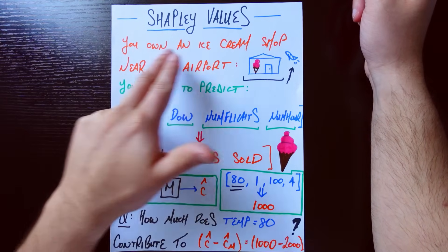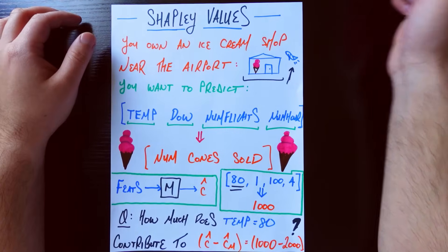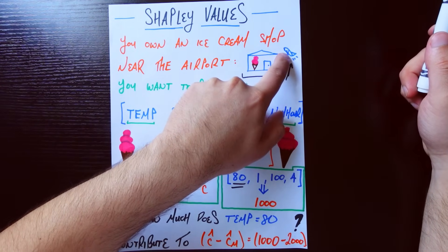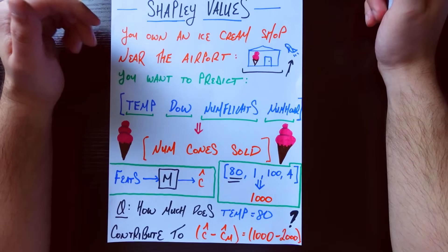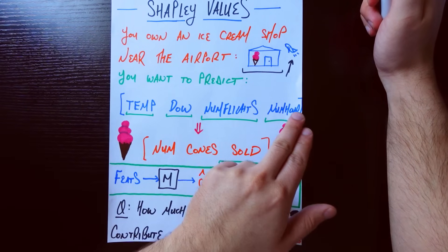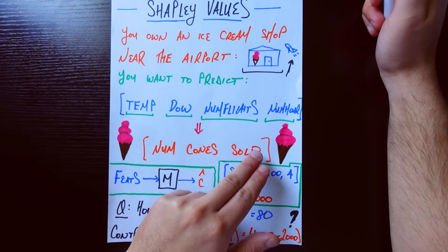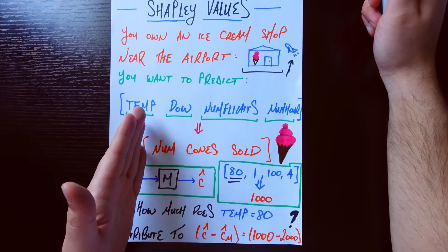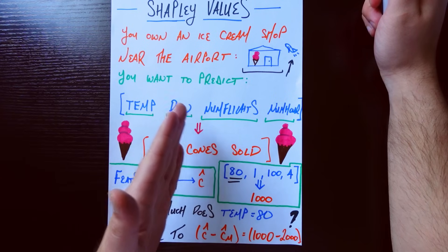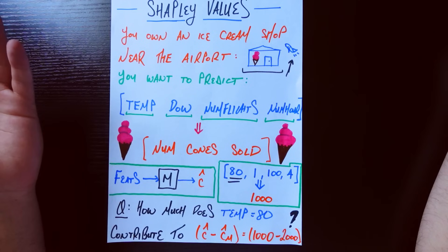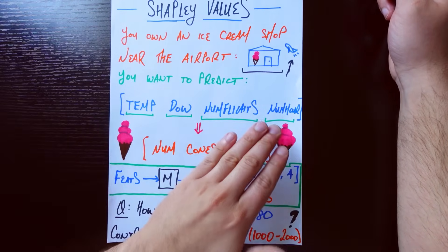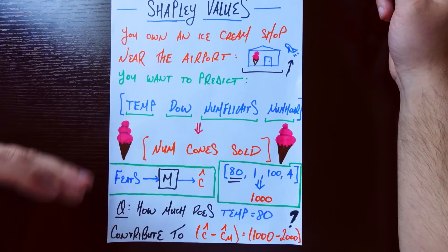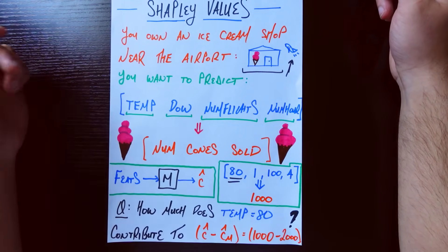Let's do a setup. Let's say that you own an ice cream shop near the airport — this is my best drawing of your ice cream shop, and this is a plane, not a bird. Now let's say you're building a model using the following four features to predict the number of ice cream cones you're going to be selling on any given day: temperature in Fahrenheit (sorry to my Celsius friends), day of the week as an integer from 0 to 6 (zero is Monday, six is Sunday), the number of flights coming into the airport that day, and the number of hours your shop is open that day.